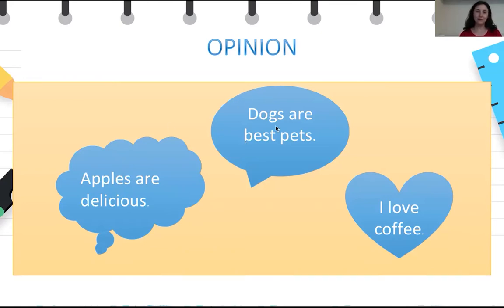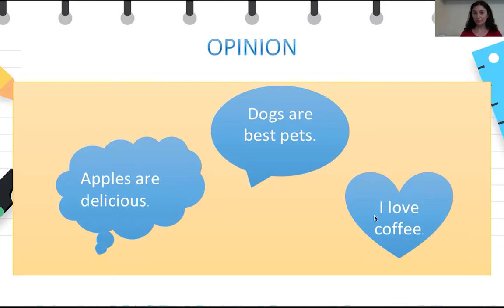Here's another one: dogs are best pets. Some people think that dogs are best pets but some people don't — they think that maybe cats are best pets. So this is an opinion. And the last example given here is 'I love coffee.' Well, some people like coffee, some people don't. So it is not true for everyone and it is not a fact. It is an opinion.